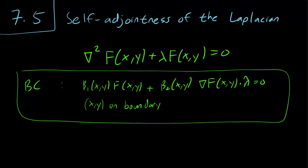And we have the Helmholtz equation over here, and remember that we always include these boundary conditions. Beta 1 f plus beta 2, the gradient of f dot with the normal vector is equal to zero for any points x, y on the boundary.